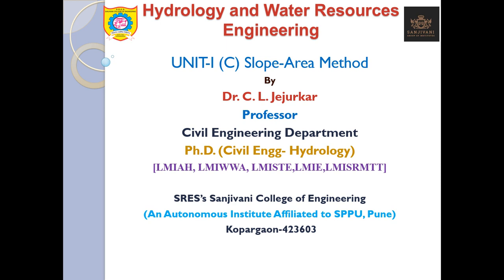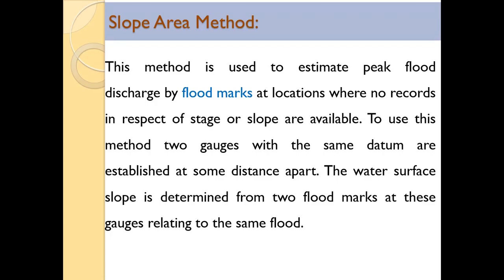Welcome to the lecture on stream gauging. In today's video we shall discuss the slope area method of stream gauging. This method is used to estimate peak flow discharge by flow marks at locations where no records in respect of stage or slope are available, making it impossible to use the area-velocity method.